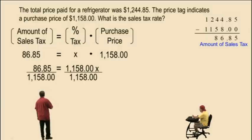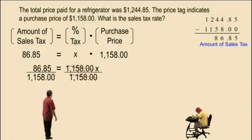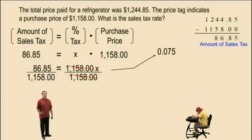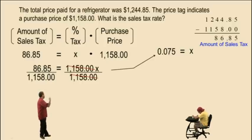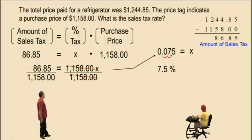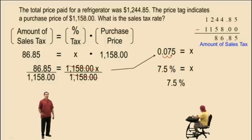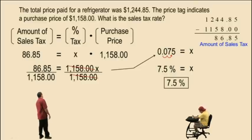To solve for x, we divide both sides by $1,158.00 and we get 0.075 for x, where x represents the percent sales tax. To convert a decimal to a percent, we move the decimal two places to the right, so our answer is 7.5%. The sales tax rate was 7.5%.